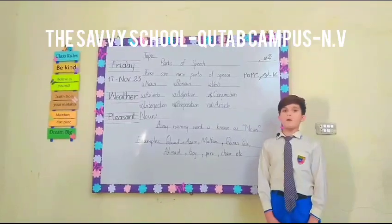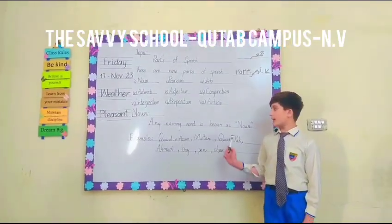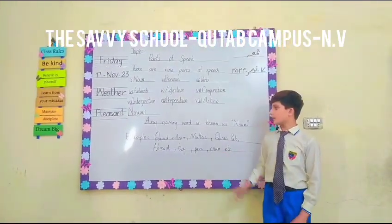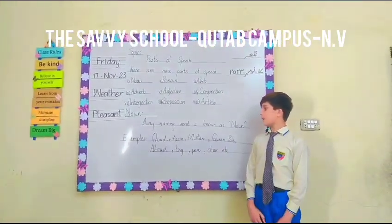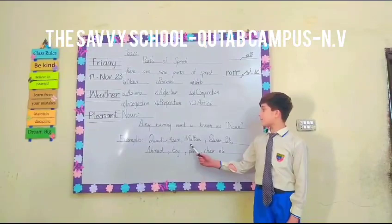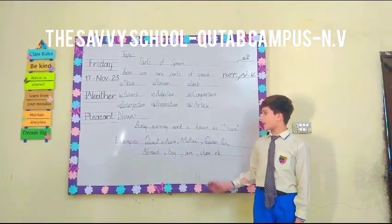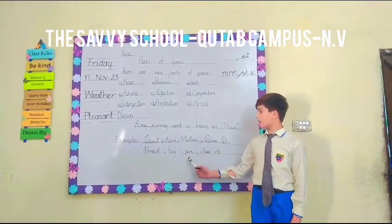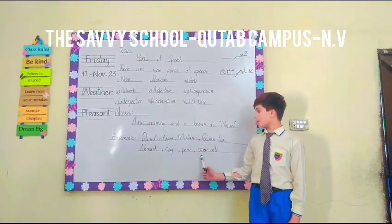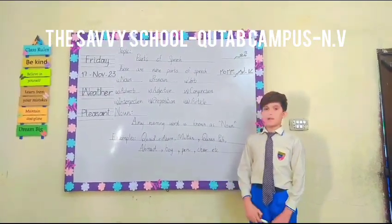Noun. Any naming word is known as a noun. For example: Qaid-e-Azam, Multan, Quran-e-Pak, Ahmed, boy, pen, chair, etc.